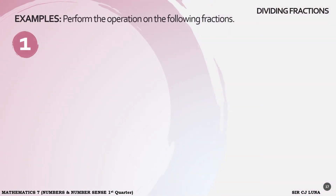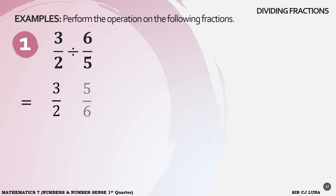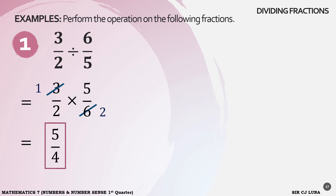Perform the operation on the following fractions. Example number 1: 3 over 2 divided by 6 over 5. When we are dividing fractions, the first step is to get the reciprocal of the divisor. So 3 over 2 will remain 3 over 2, and 6 over 5 will become 5 over 6. Then from division we proceed to multiplication. We can cancel 3 and 6 by their GCF 3: 3 becomes 1 and 6 becomes 2. So the answer is 1 times 5 over 2 times 2 — that's 5 over 4.